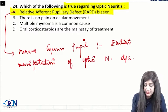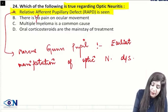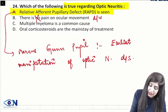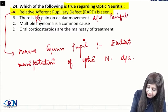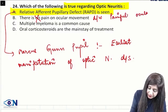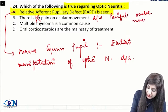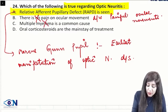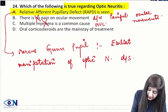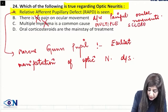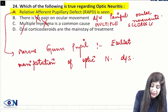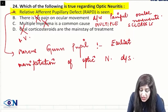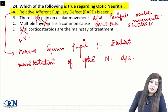The option stating there is no pain is wrong — optic neuritis is associated with painful ocular movements. Multiple myeloma is not the common cause; it is actually multiple sclerosis that is the most common cause. Oral steroids are not the mainstay of treatment; rather, IV steroids are the mainstay of treatment.